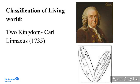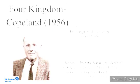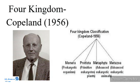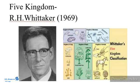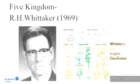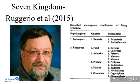A comparison of classification systems proposed for the living world is given here. Two-kingdom classification was proposed by Carolus Linnaeus in 1735, with kingdoms Plantae and Animalia. Three-kingdom classification was proposed by Ernest Haeckel in 1866, adding Protista. Four-kingdom classification by Copeland added Monera. Five-kingdom classification by R.H. Whittaker in 1969 includes Monera, Protista, Fungi, Plantae, and Animalia. Six-kingdom classification by Thomas Cavalier-Smith in 1988 includes Animalia, Fungi, Plantae, Chromista, Protozoa, Archaea, and Bacteria. Seven-kingdom classification was proposed by Ruggiero et al. in 2015.